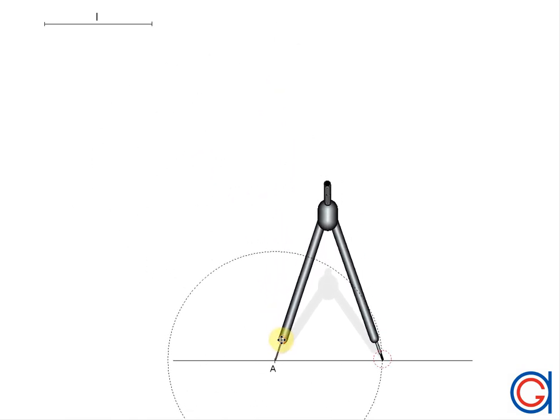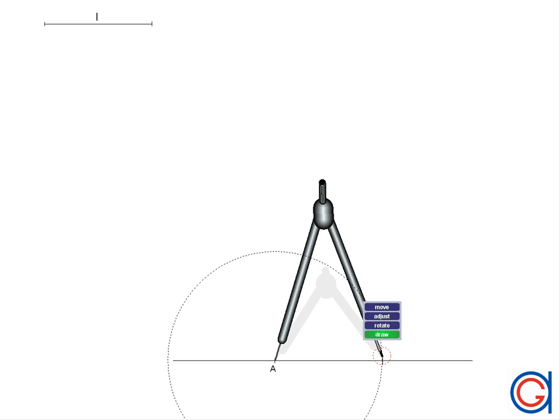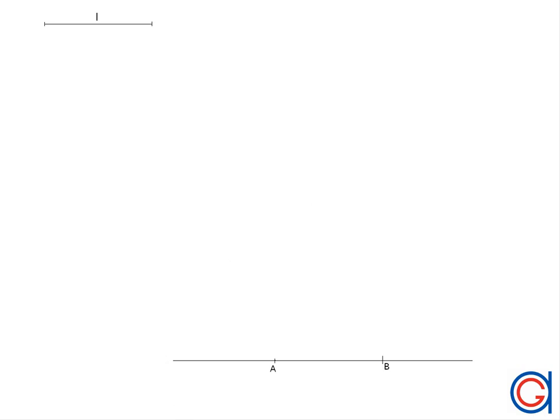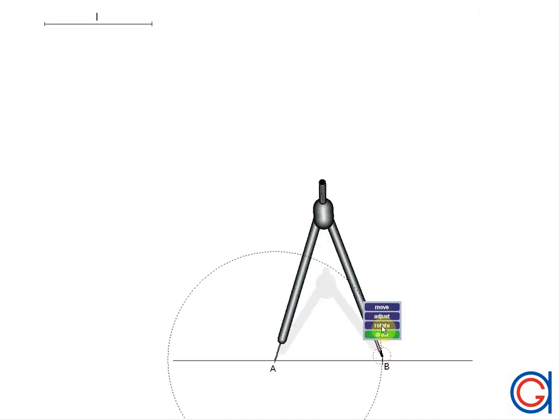We are going to mark a point A. We are going to set our compass to the given length L on the top left hand side of our screen and transport this length onto our line. Setting our compass on point A and scribing an arc to form point B. So now we have our line segment AB which will be the base of our polygon.